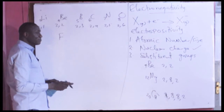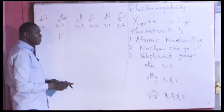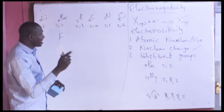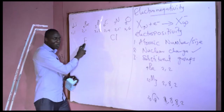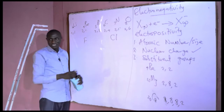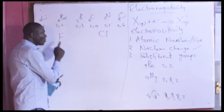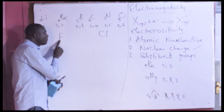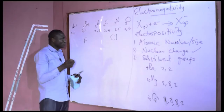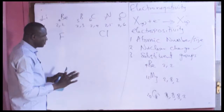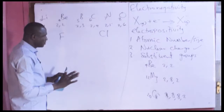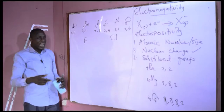The most electronegative element in the periodic table is fluorine. This differs from electron affinity, where I told you that chlorine has the highest electron affinity — higher than fluorine. But fluorine is more electronegative than chlorine. Electronegativity is a function of size: the smaller size of the fluorine atom favors its ability to easily attract bonding electrons compared to chlorine. That is why most compounds formed by fluorine are more polar in nature.